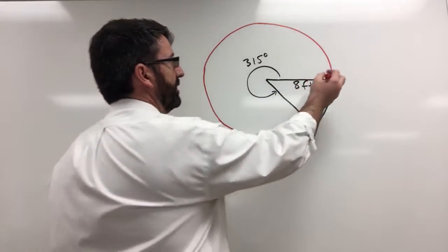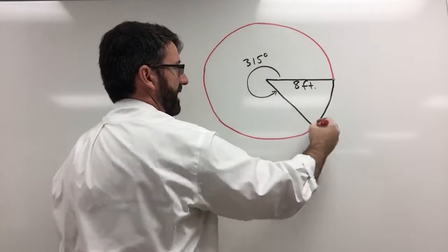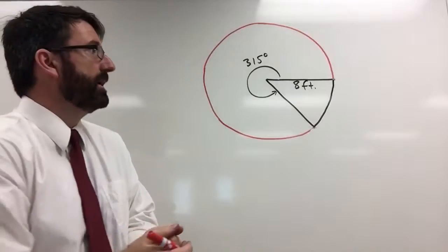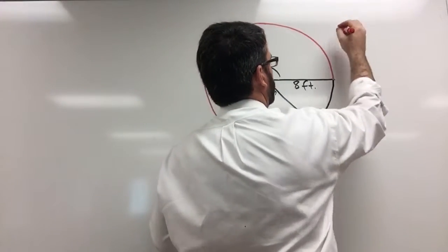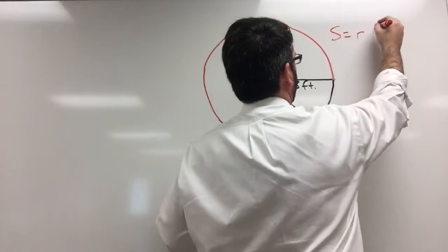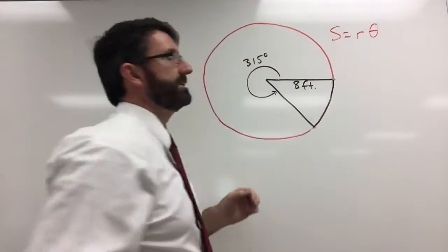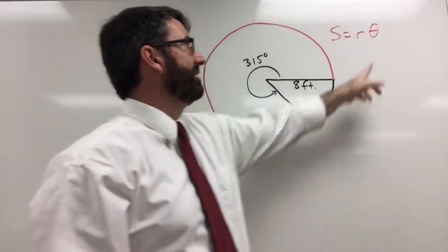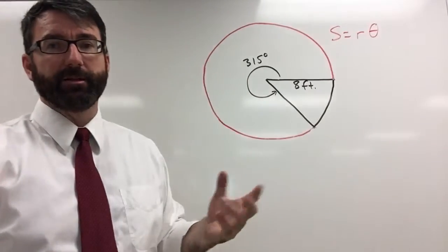So we're looking for this length all the way around on this red line here. The formula for arc length is S equals R theta, where S is arc length, R is the radius of the circle, and theta is the angle.